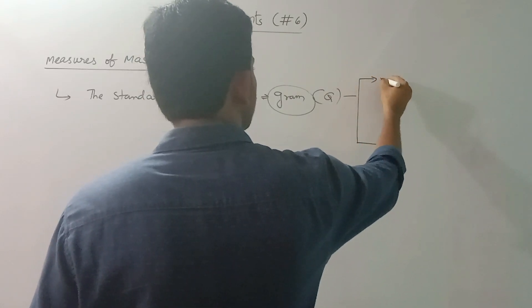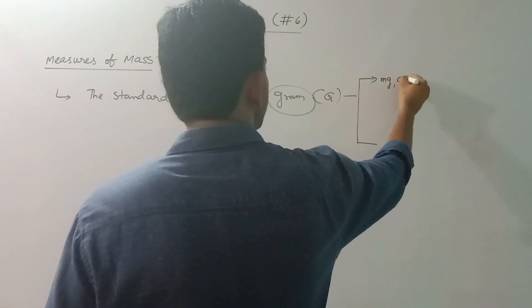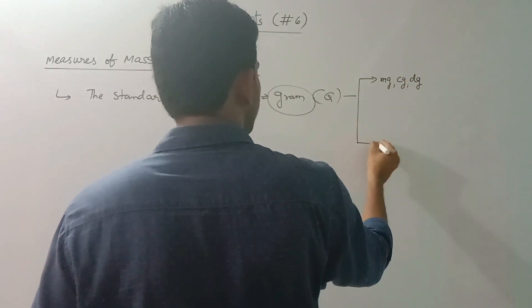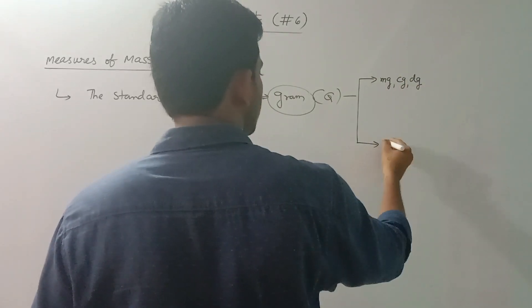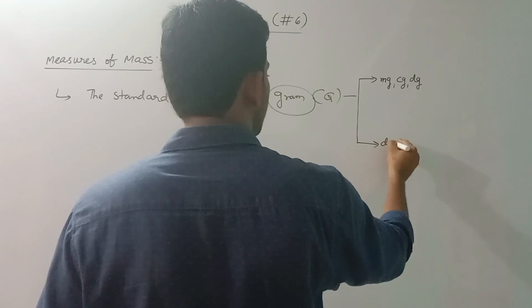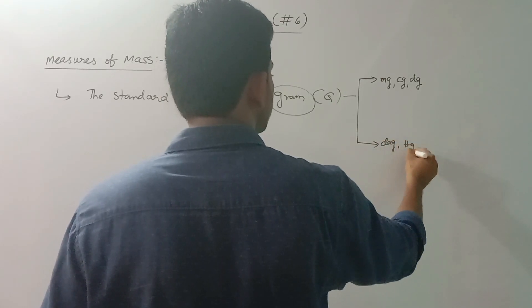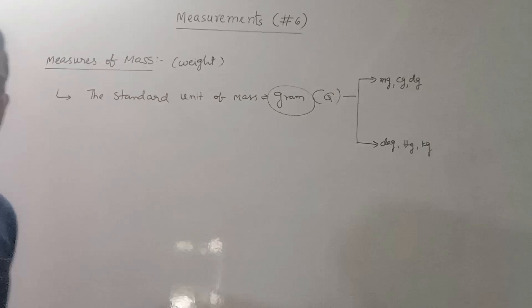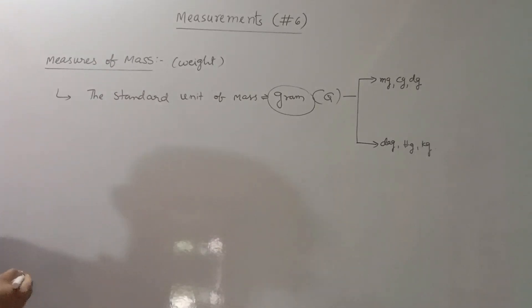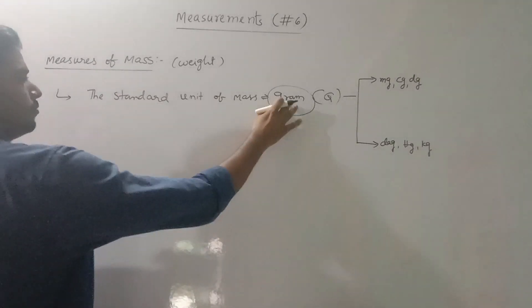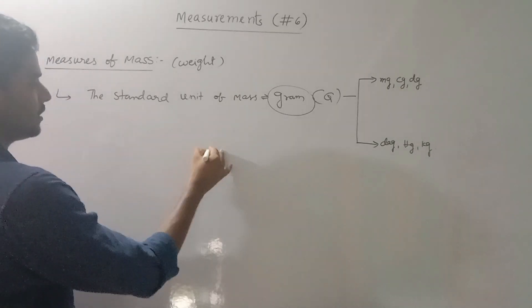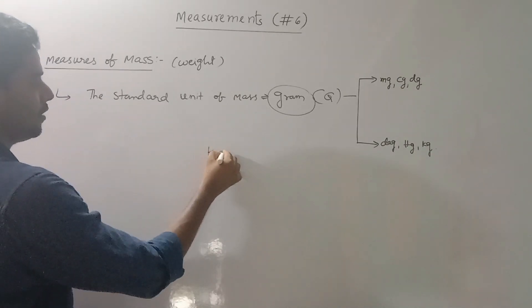The units smaller than gram are: milligram, centigram, and decigram. The units larger than gram are: decagram, hectogram, and kilogram. We know that gram is related to kilogram. Let's take a look at the full measurement table.